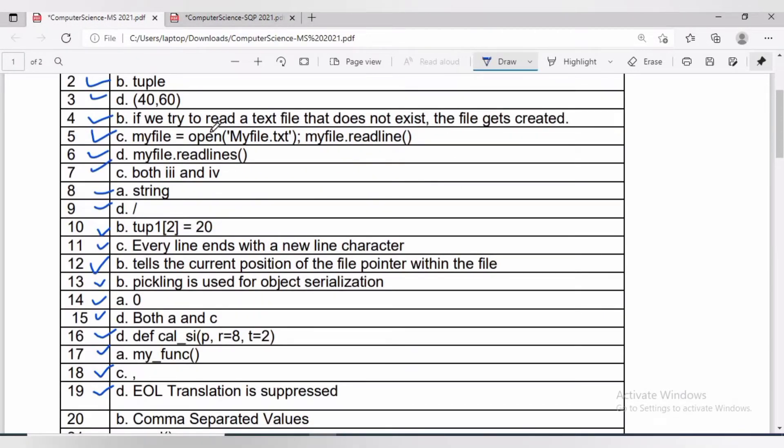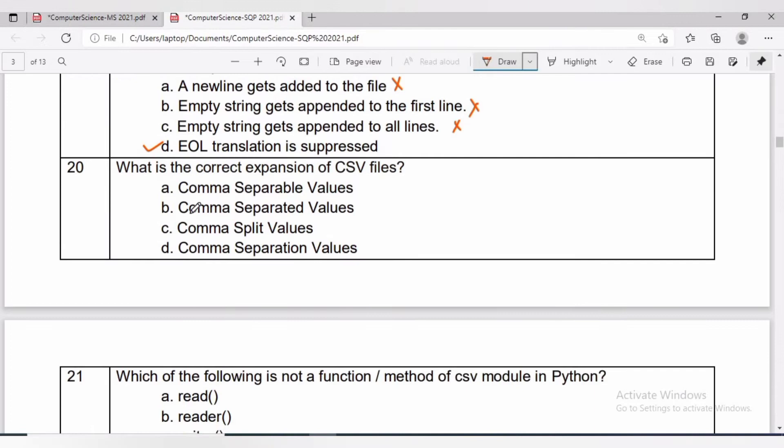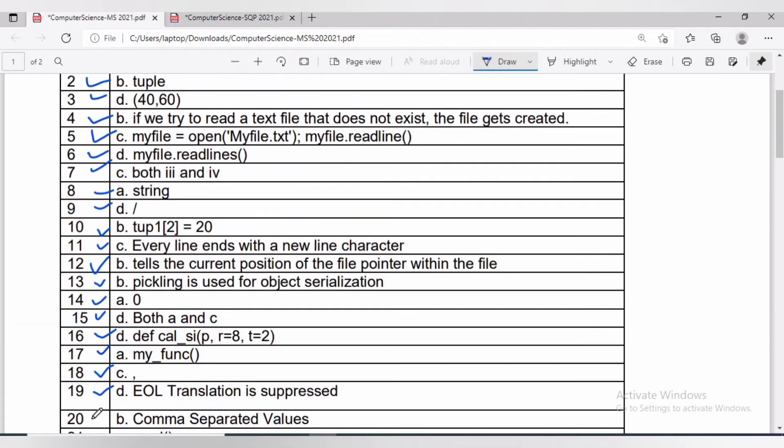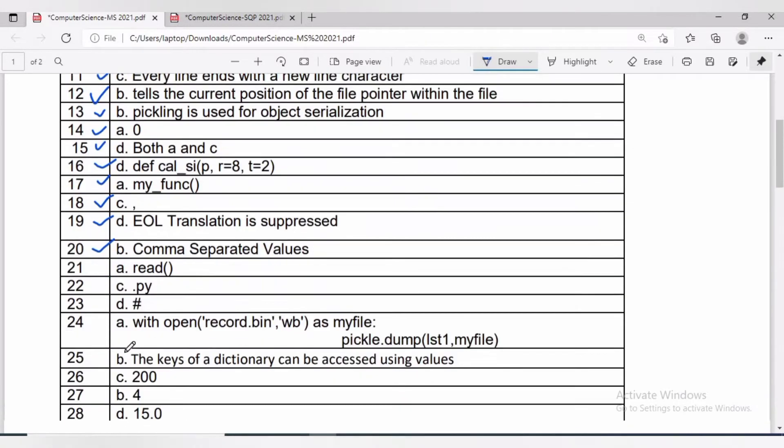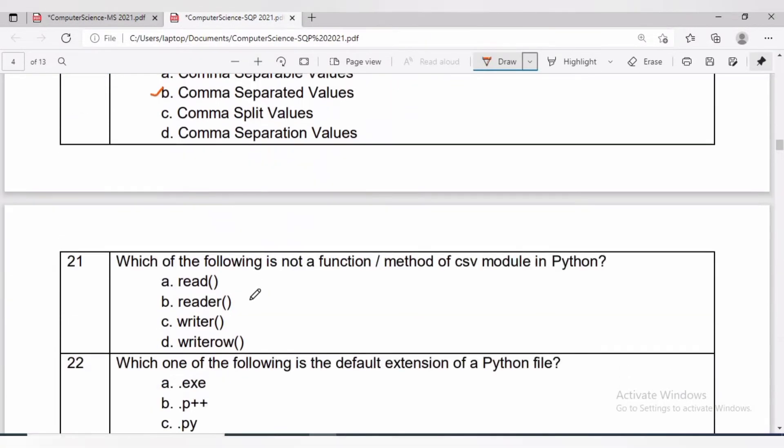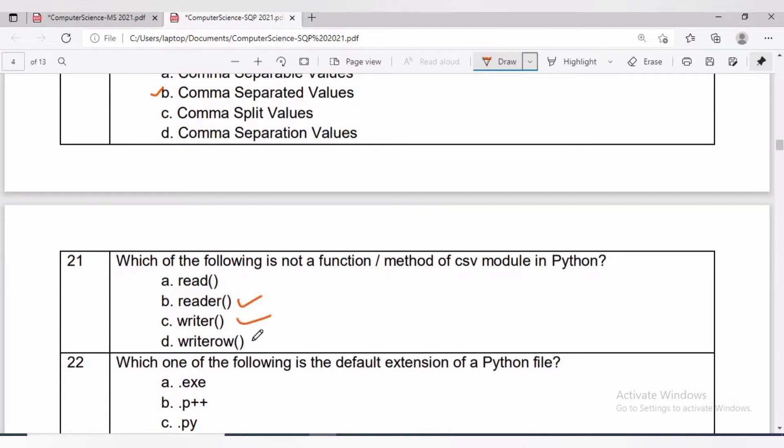Now question number 20: what is the correct expansion of CSV file? It is Comma Separated Values, which is option B.